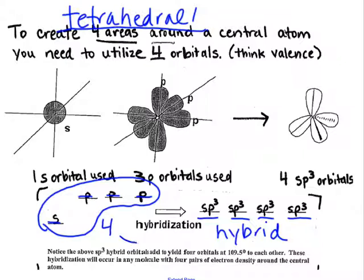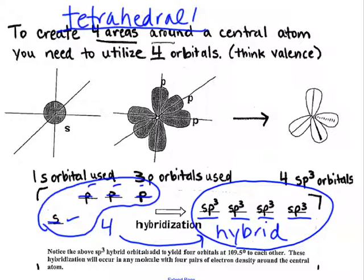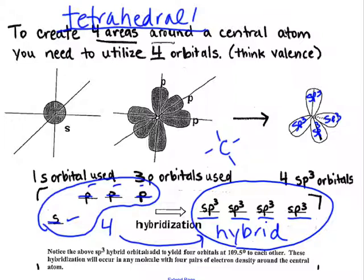We need four orbitals to make four different areas. Each of these sp3 orbitals is the exact same energy — unlike before, where we had one low-energy S and three higher-energy P orbitals. We've created a hybrid, which is kind of an average of all those we put into the punch bowl. So each orbital around something like CH4 is the same energy and called sp3. There are four of them — not an S and three P's, but four separate orbitals each named sp3. The sp3 orbitals naturally fall 109.5 degrees apart, giving tetrahedral its shape.